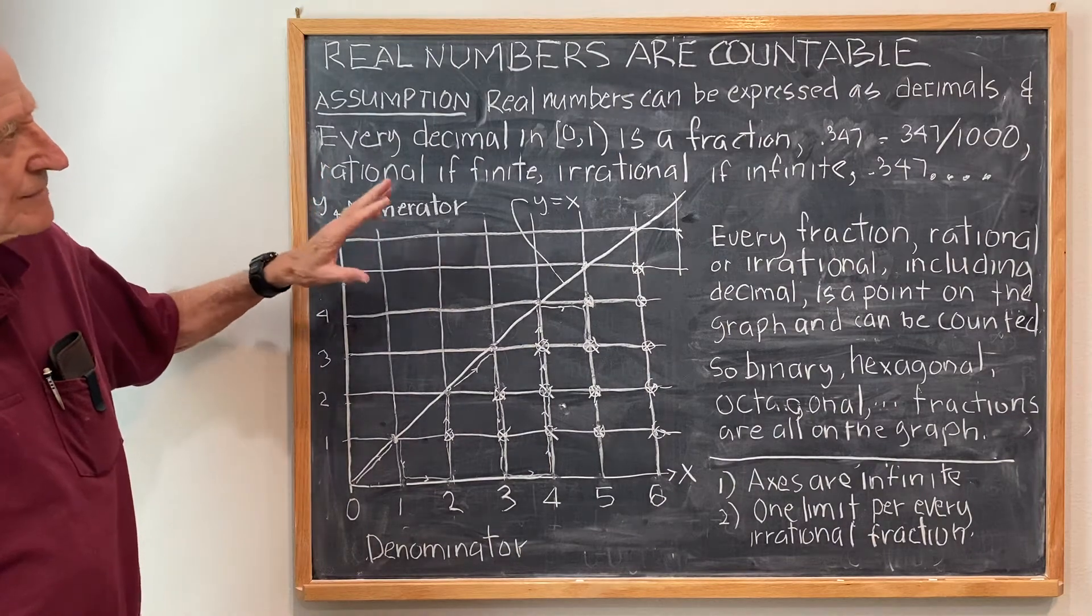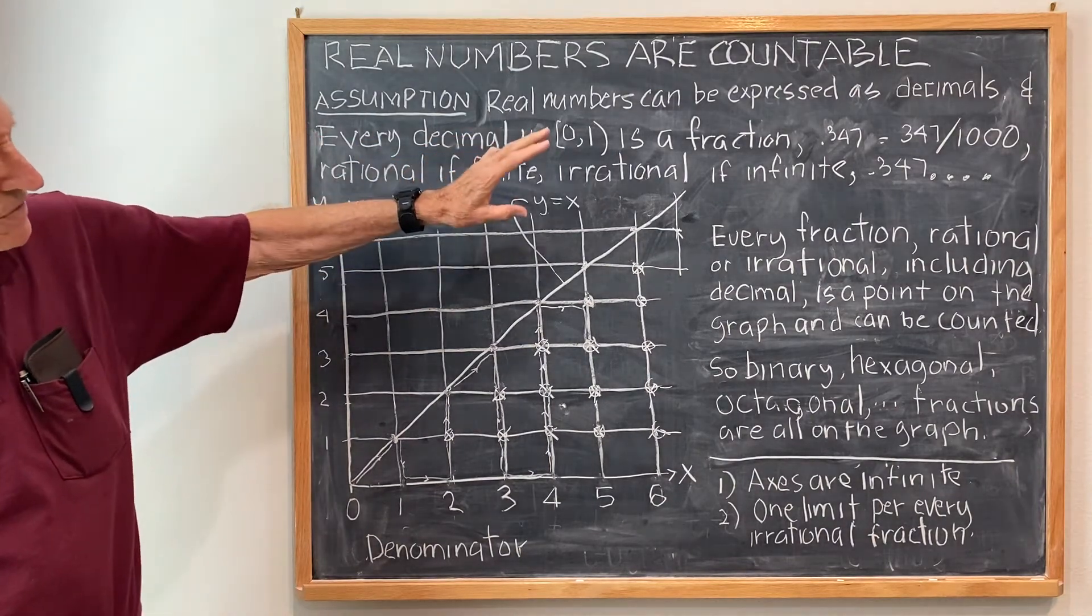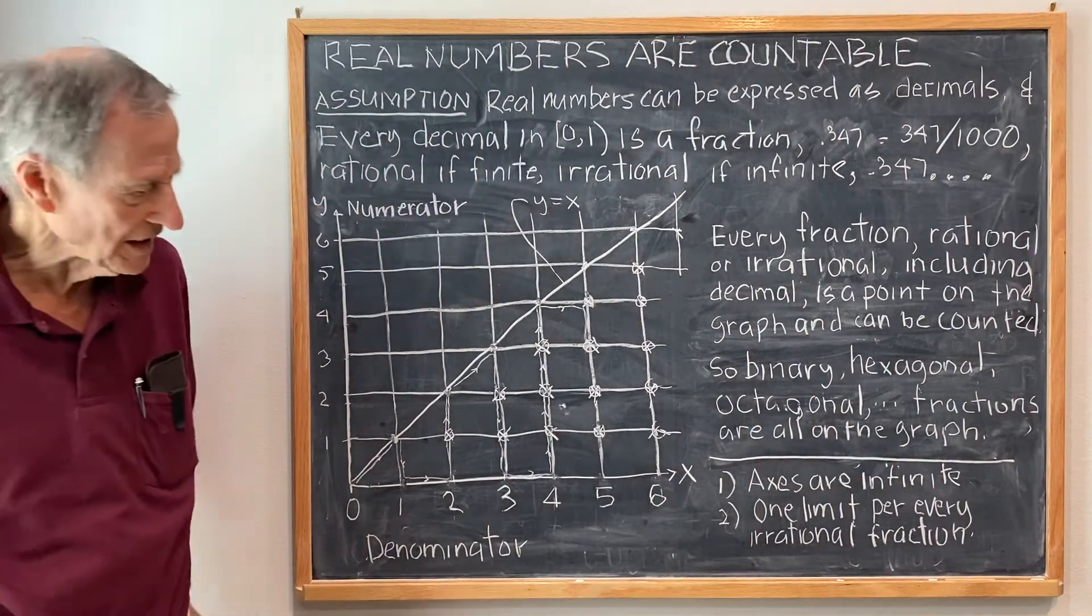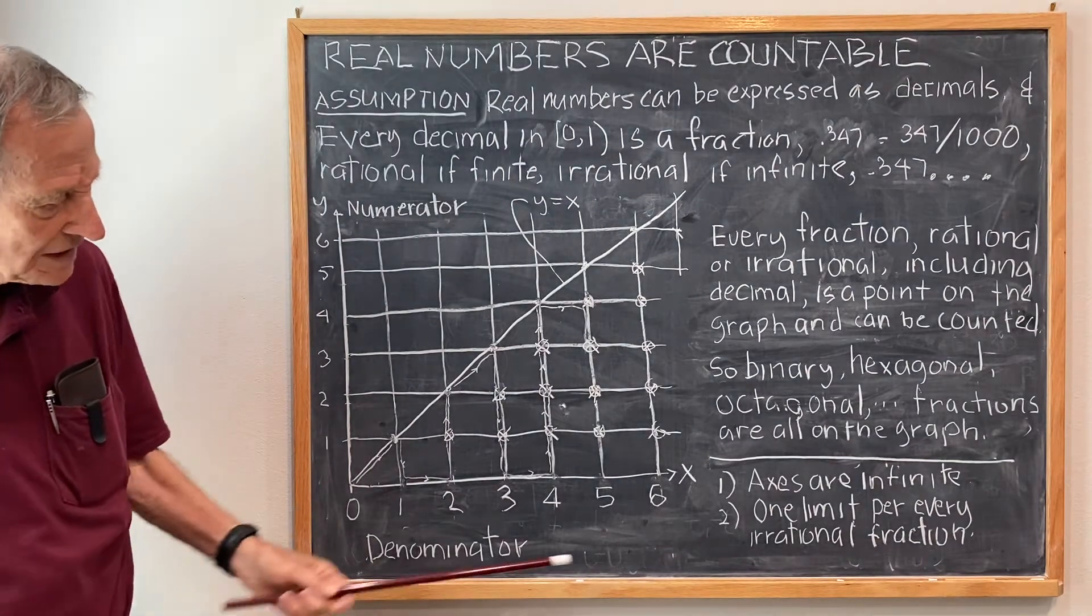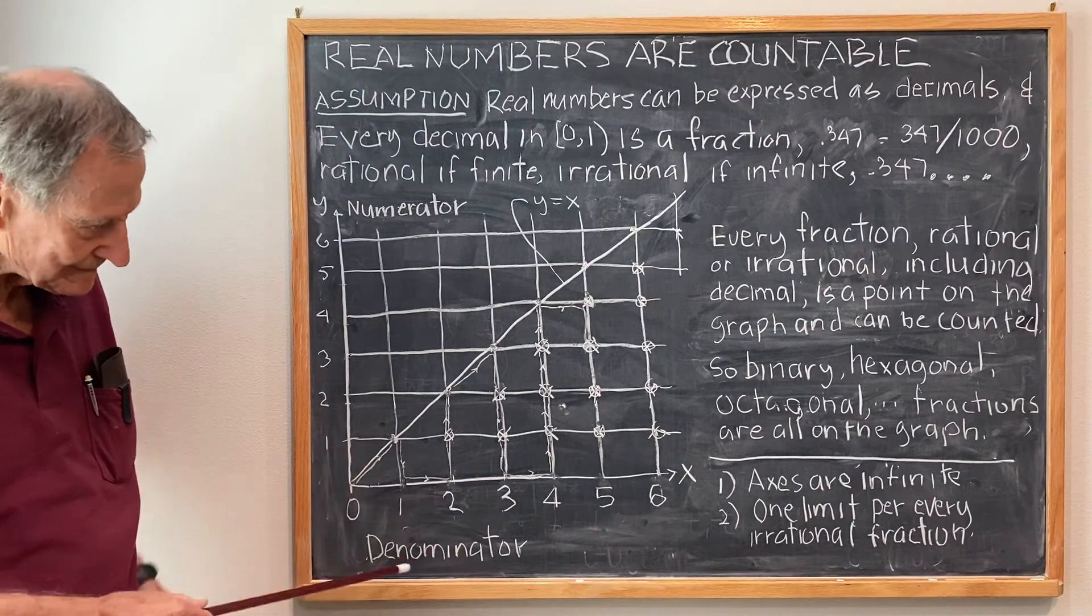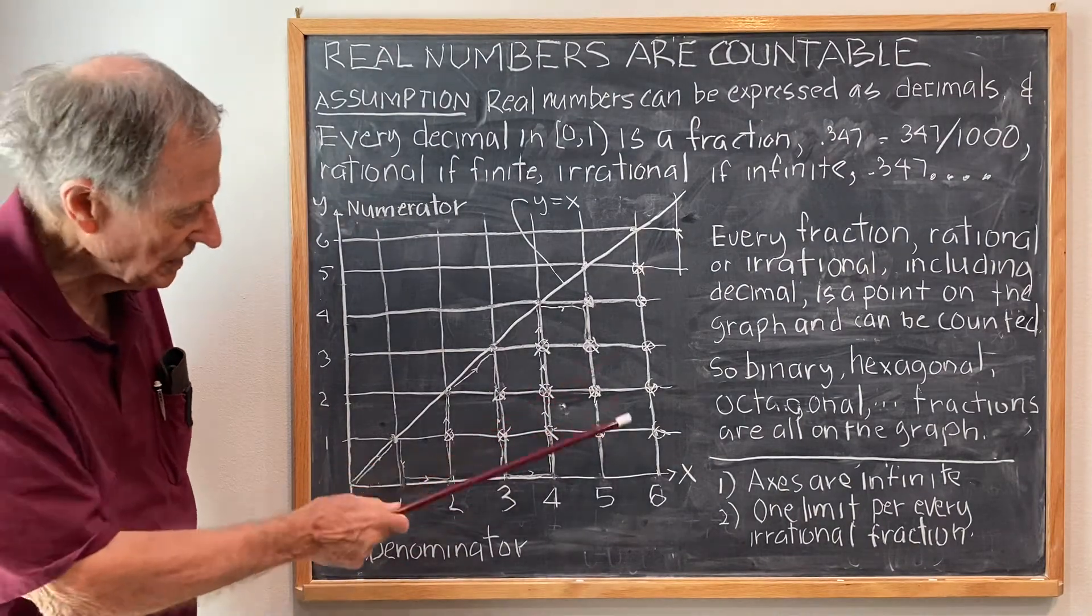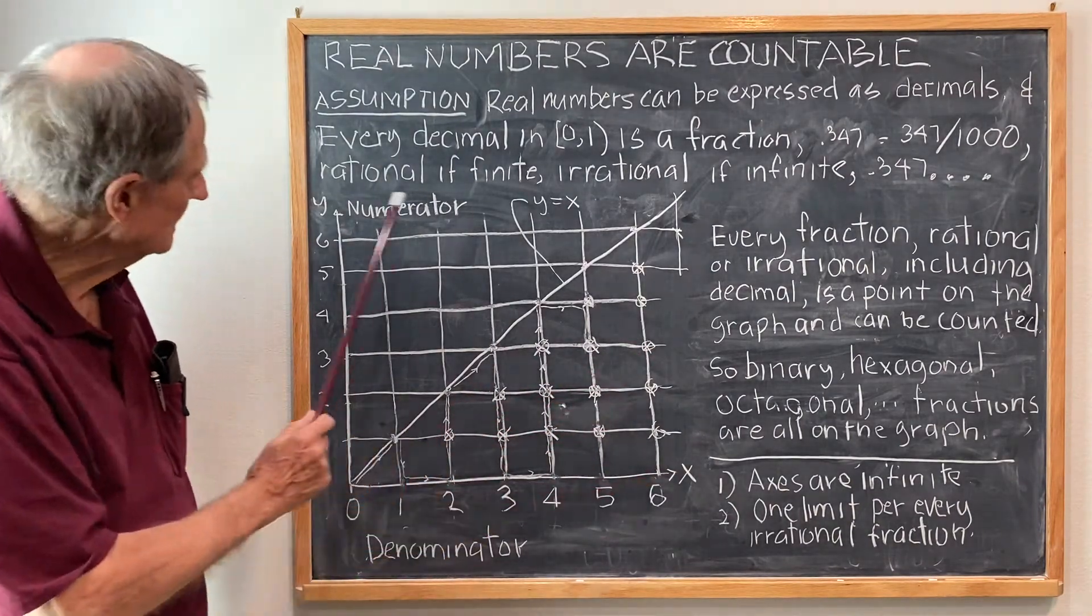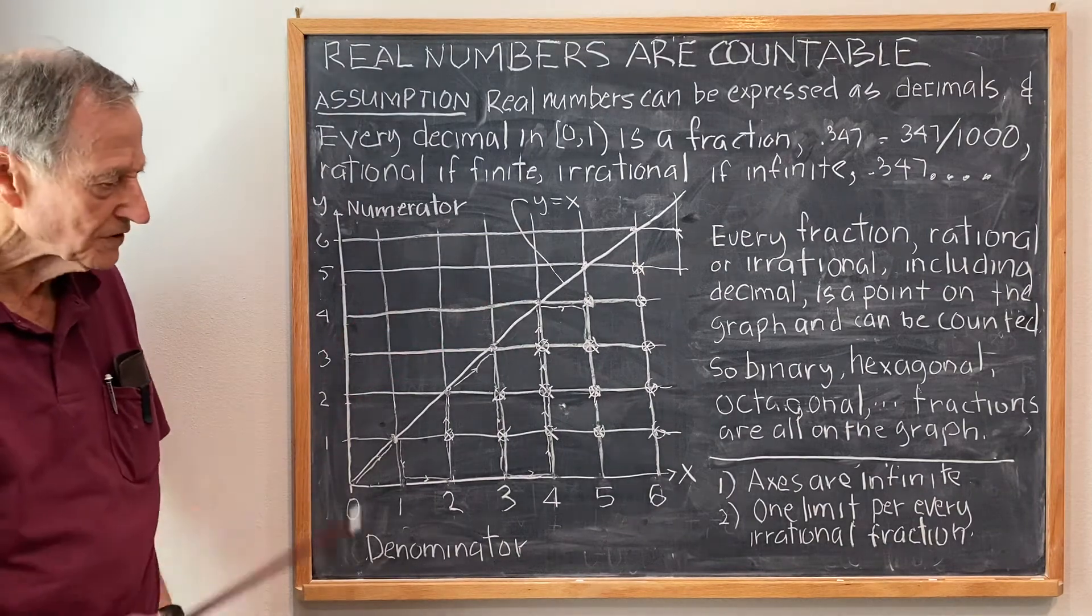Therefore, the rational, the decimals, the real numbers can be counted. Now, I note that the axes are infinite, which I claim that even the limits are on the graph because the axes extend to infinity in both.